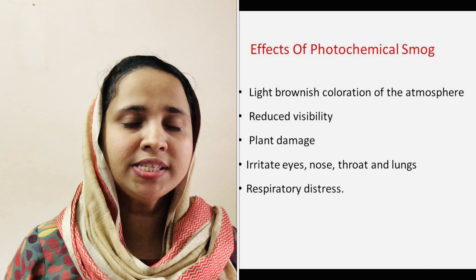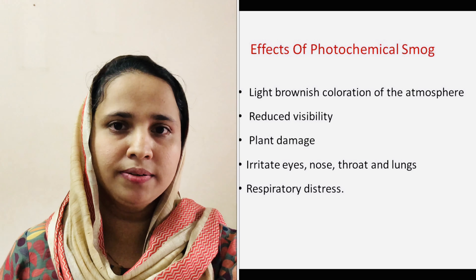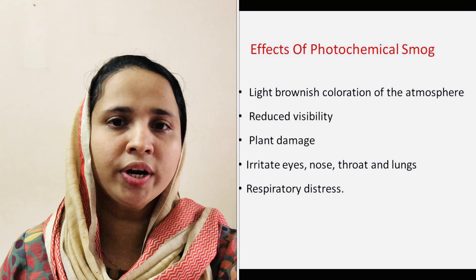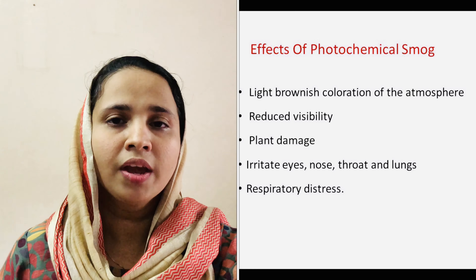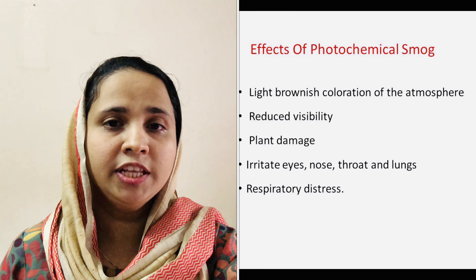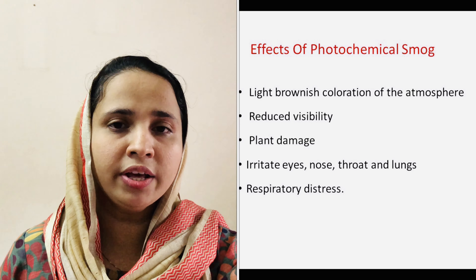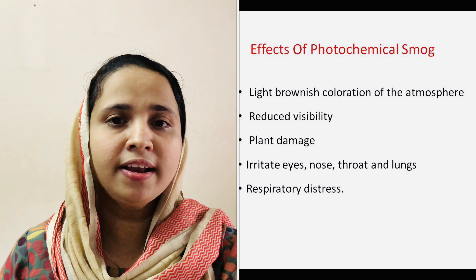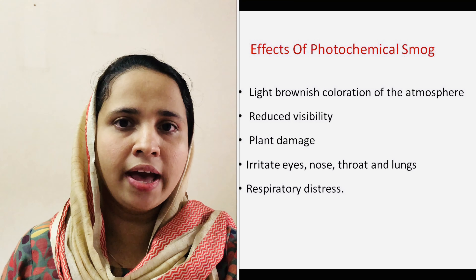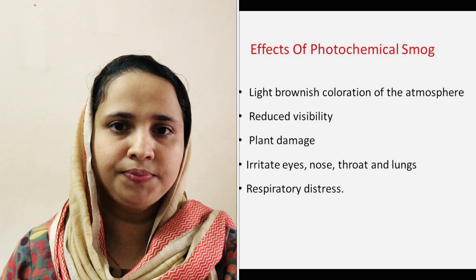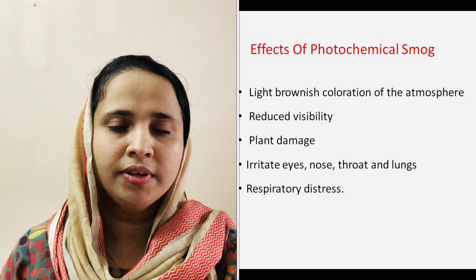Do you know what are the adverse effects of photochemical smog? The main ingredients of photochemical smog are nitrogen oxides and ozone, as well as various volatile organic compounds including formaldehyde, ketones, aldehydes, acrolein, and peroxyacetyl nitrate. These pose several health issues to living organisms and are harmful to non-living things. Peroxyacetyl nitrate, ozone and aldehyde components of the smog cause eye irritation and respiratory tract problems. Some of the volatile organic compounds present in the smog are carcinogenic in nature and cause cancer.